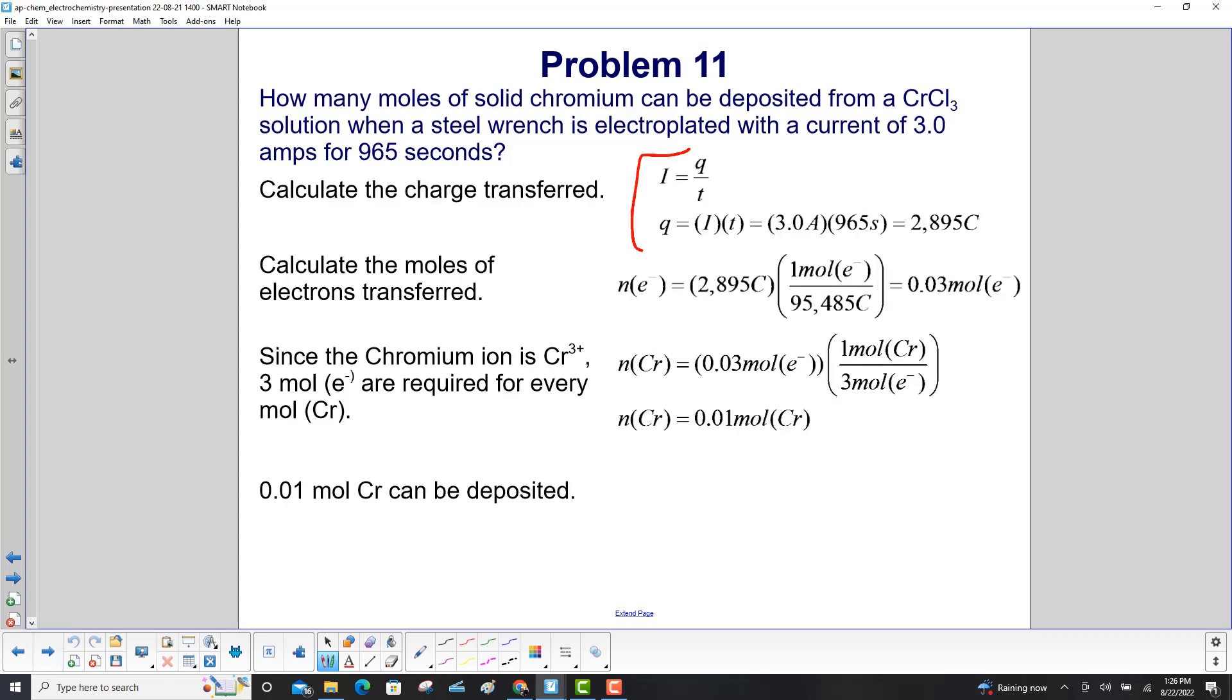Calculate the charge transferred. i = q/t, so q = i × t. 3.0 amps times 965 seconds equals 2895 coulombs.